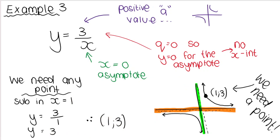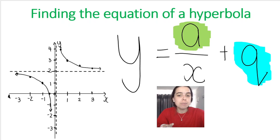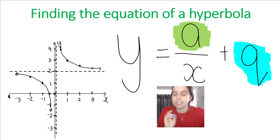Any positive 'a' value gives a graph in these same quadrants, so you need to give another specific point. Sub in x equals one: three divided by one equals three, so plot and label the point (1, 3). With that point and the asymptotes at x equals zero and y equals zero, anyone can identify your equation. Without any labeled points, I cannot determine which function the graph belongs to. Let me know in the comments if you'd like videos on finding the equation of a hyperbola, domain and range, or past paper questions.